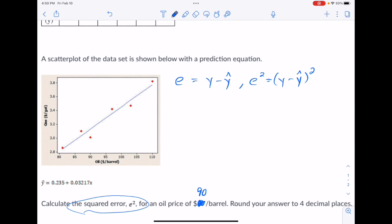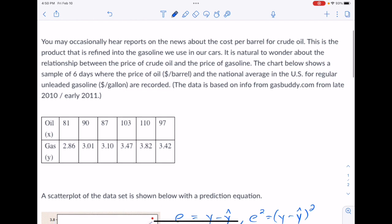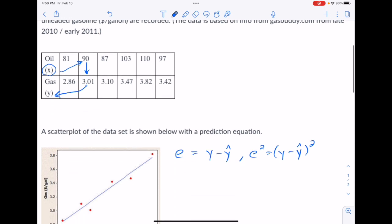First of all, when they give you an X value like the 90, because that's $90 per barrel for oil, we can go back up here and see that oil is the X value. So they gave us an X of 90, and the chart tells us that the Y value that goes with that is 3.01. Just doing some information gathering, we can see from that chart that Y that goes with an X of 90 is 3.01.